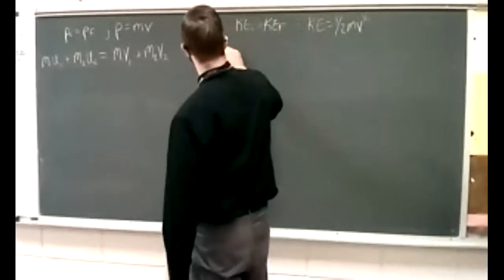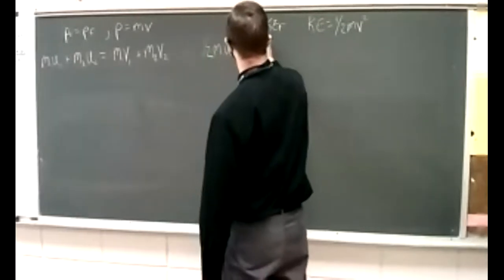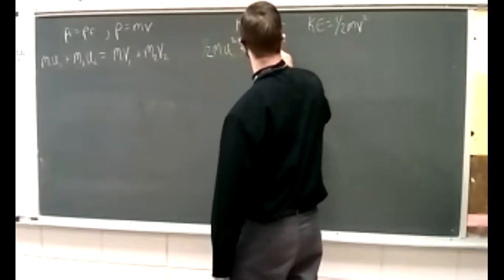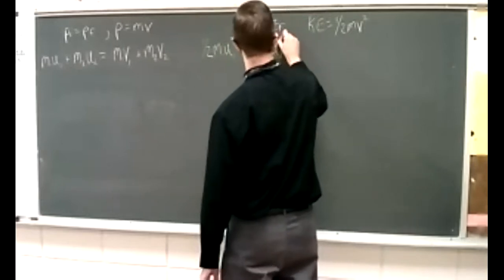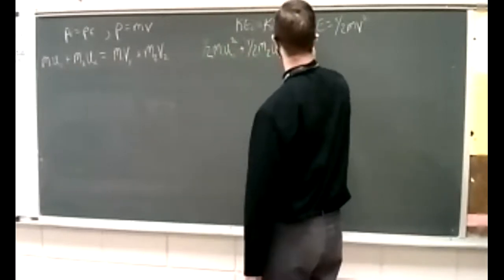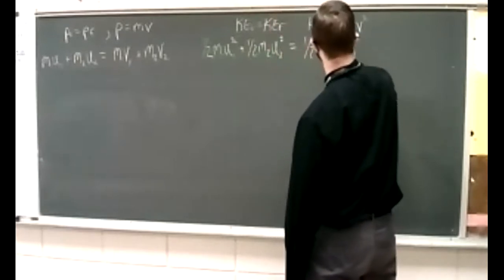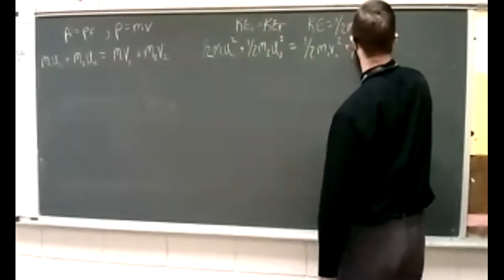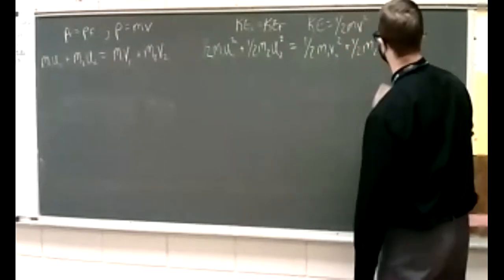So you have one half M1 U1 squared plus one half M2 U2 squared equals one half M1 V1 squared plus one half M2 V2 squared.